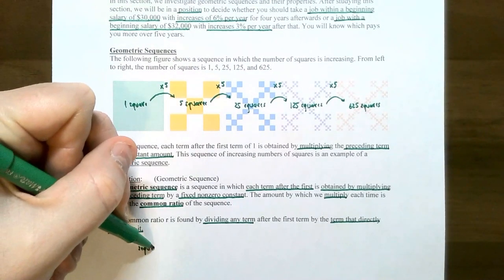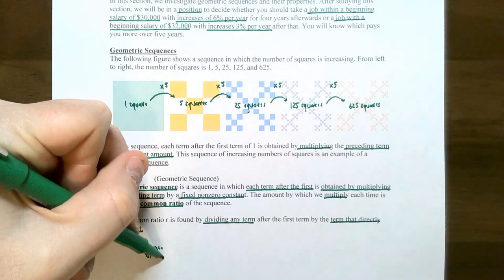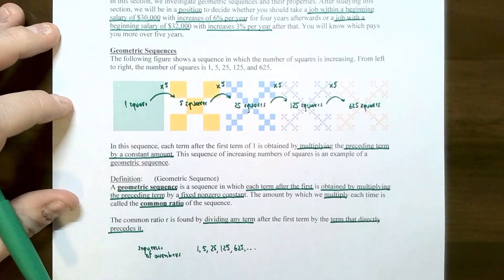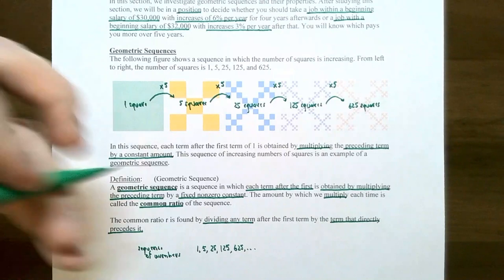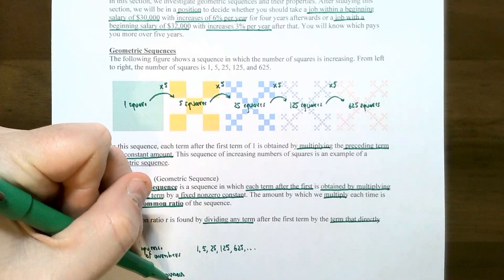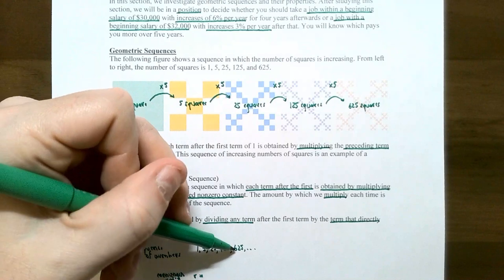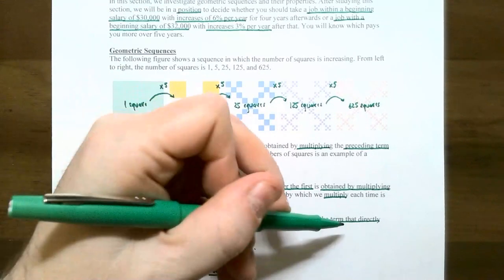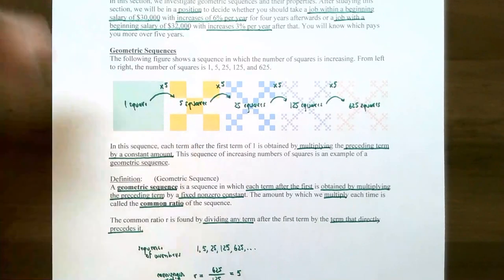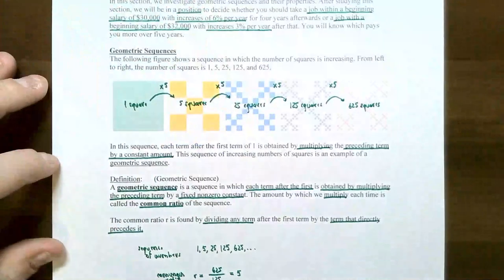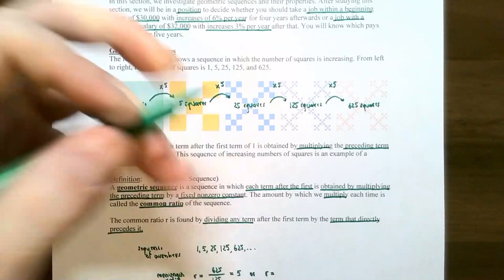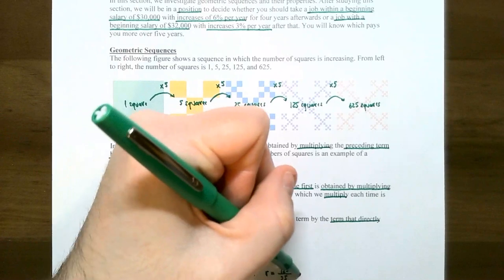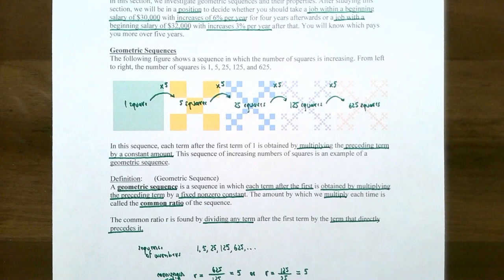Let's try out the sequence of number of squares shaded: 1, 5, 25, 125, 625, and so on. You can choose any two consecutive terms to calculate the common ratio, denoted with lowercase r. Let's choose the last two listed, 625 and 125. Take 625, the newer term, and divide it by the preceding term 125, and you get the common ratio of five. It doesn't matter which two terms you choose — if I choose 125 and 25, I get 125 divided by 25, which is also five. That's why it's called the common ratio; it should be consistent from one term to the next.